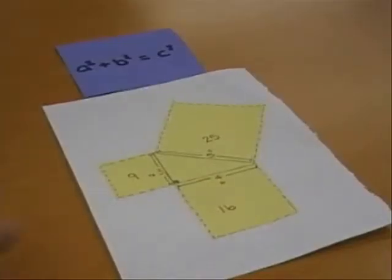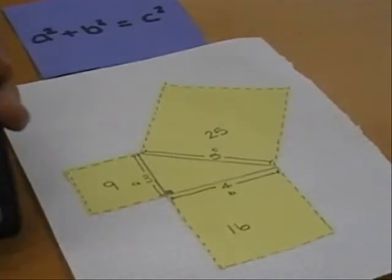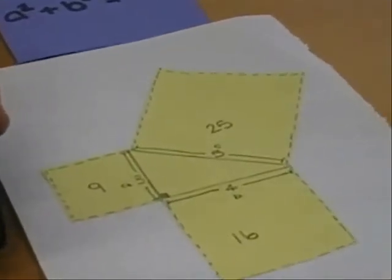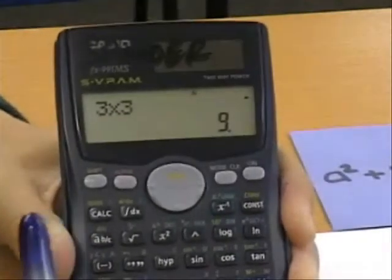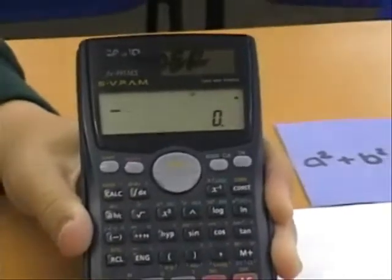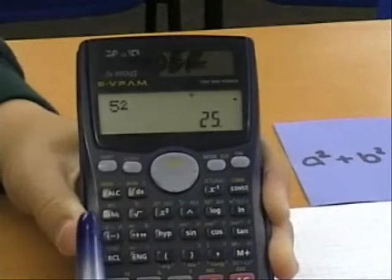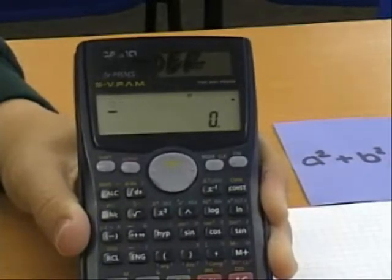An example of this is the classic 3, 4 and 5 triangle. You can see that 3 squared equals 9, or this could also mean that 3 times 3, which also equals 9. 4 squared or 4 times 4 is 16. And 5 squared equals 25, the same as 5 times 5.